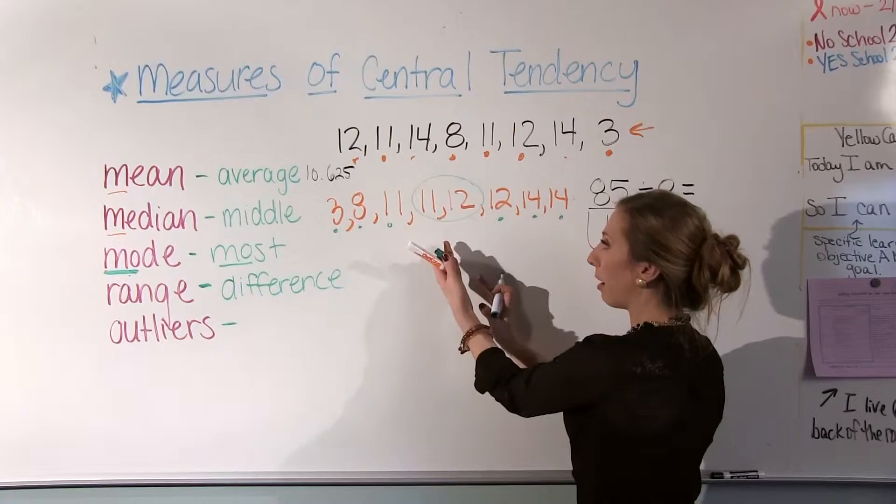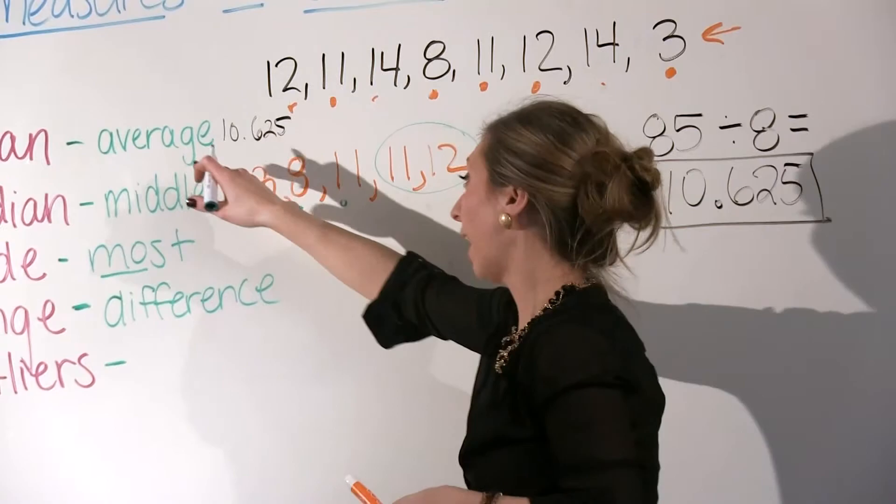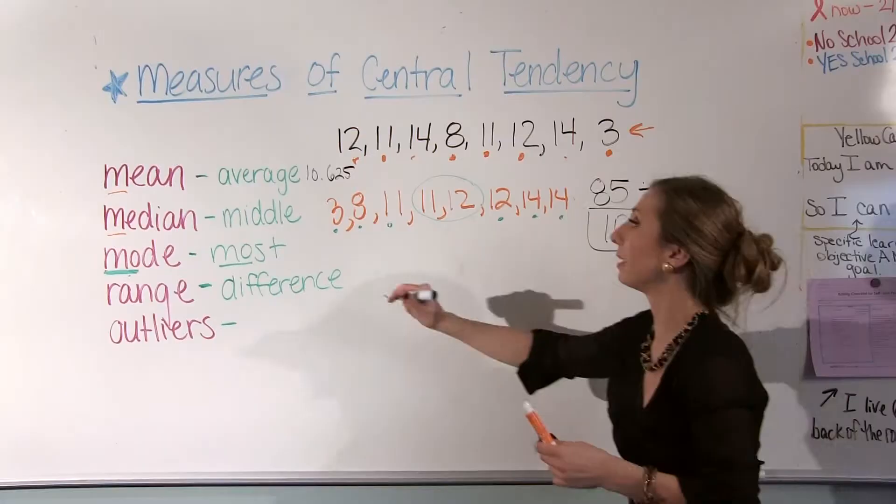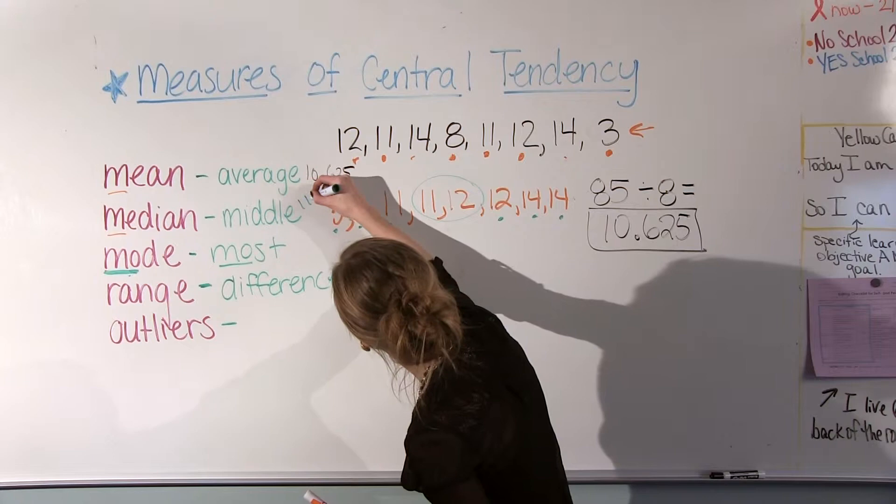So what that means is that there are two numbers in the middle. And with the two numbers in the middle, what we have to do is find the average of those, and when we find the average, that's going to be our median. So the number halfway in between the 11 and 12, what that'll work out is going to be 11.5. So that's our middle or our median.